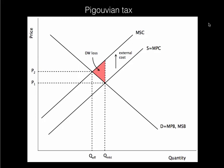One way to deal with this externality — and it's not the only way — but if we can somehow get these suppliers to internalize this cost, internalize the externality, and account for all of the costs of their production, then that could solve the problem. So if we can tax them by just the right amount,